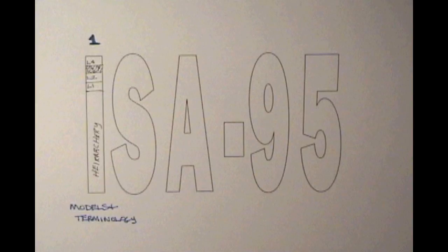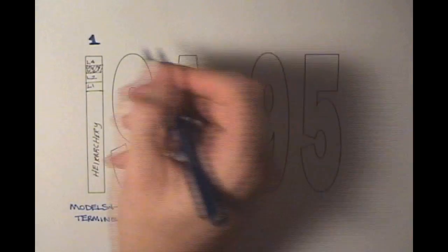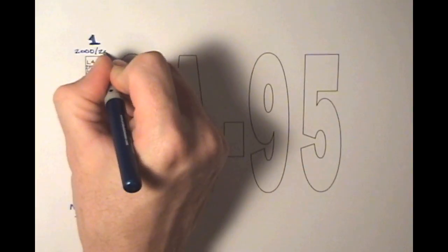Another model introduced is the functional model, which outlines all of the necessary activities inside of the level 3 or MES layer. This part was introduced in the year 2000, with a revision issued in 2010.